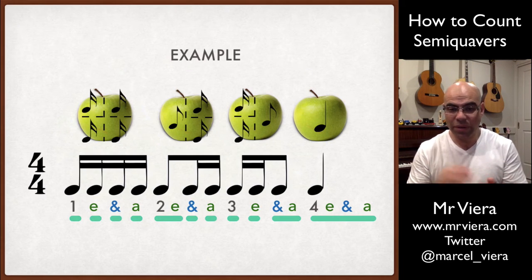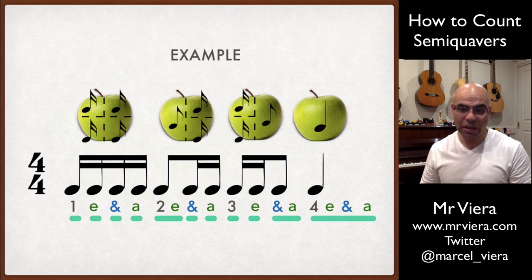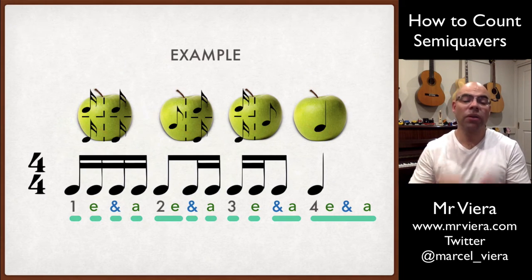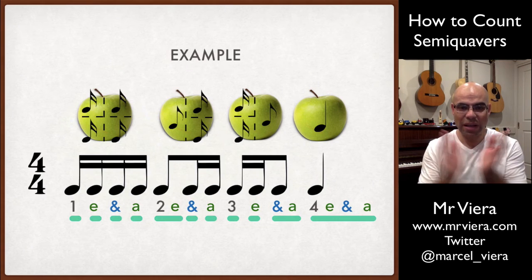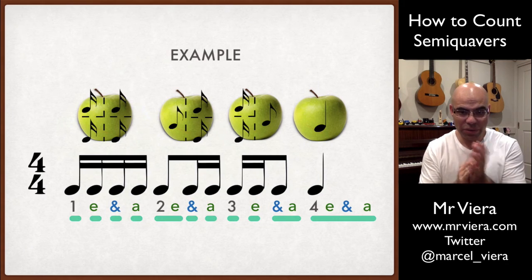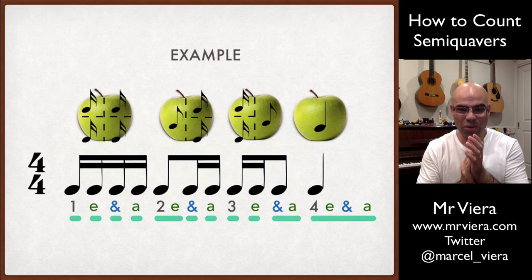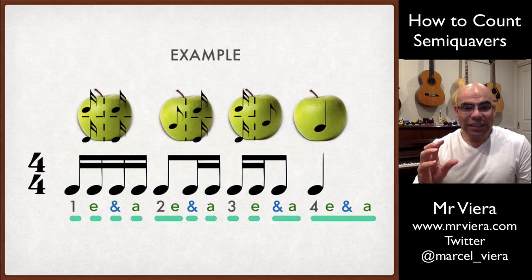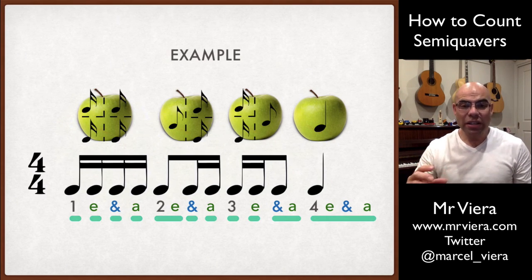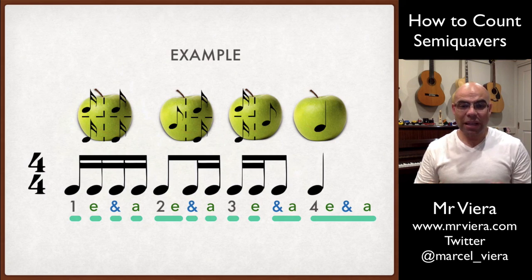Let's try this together. Ready? Three and four, go. One E and R, two E and R, three E and R, four E and R. So we can start to combine different rhythmic groupings together to be able to get this effect.